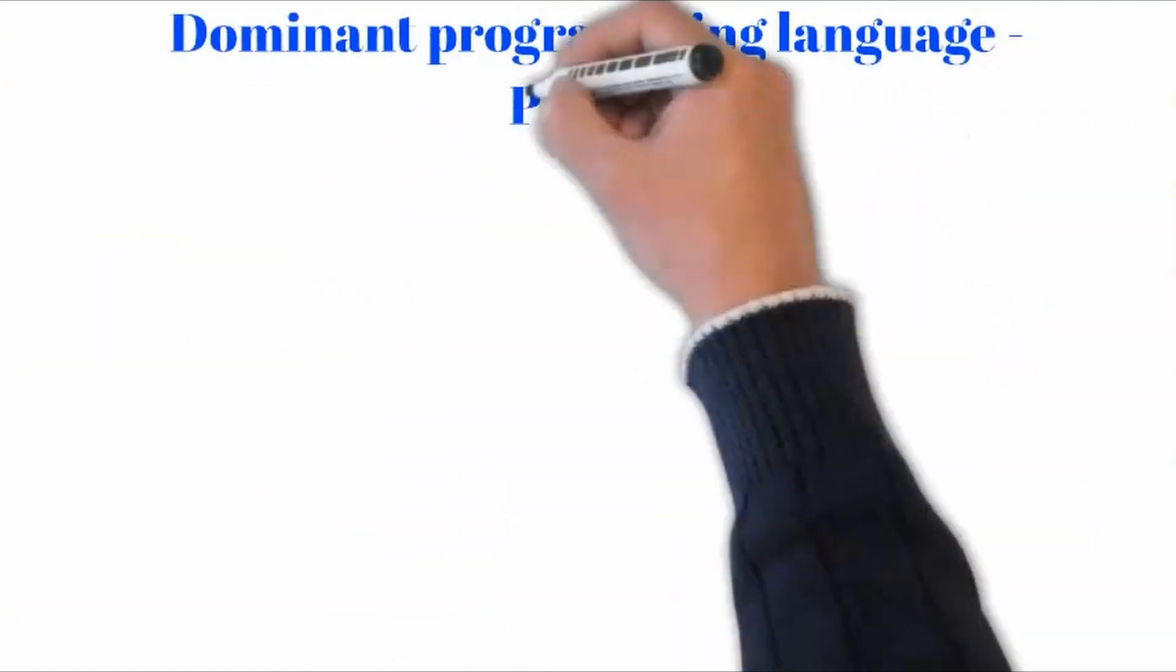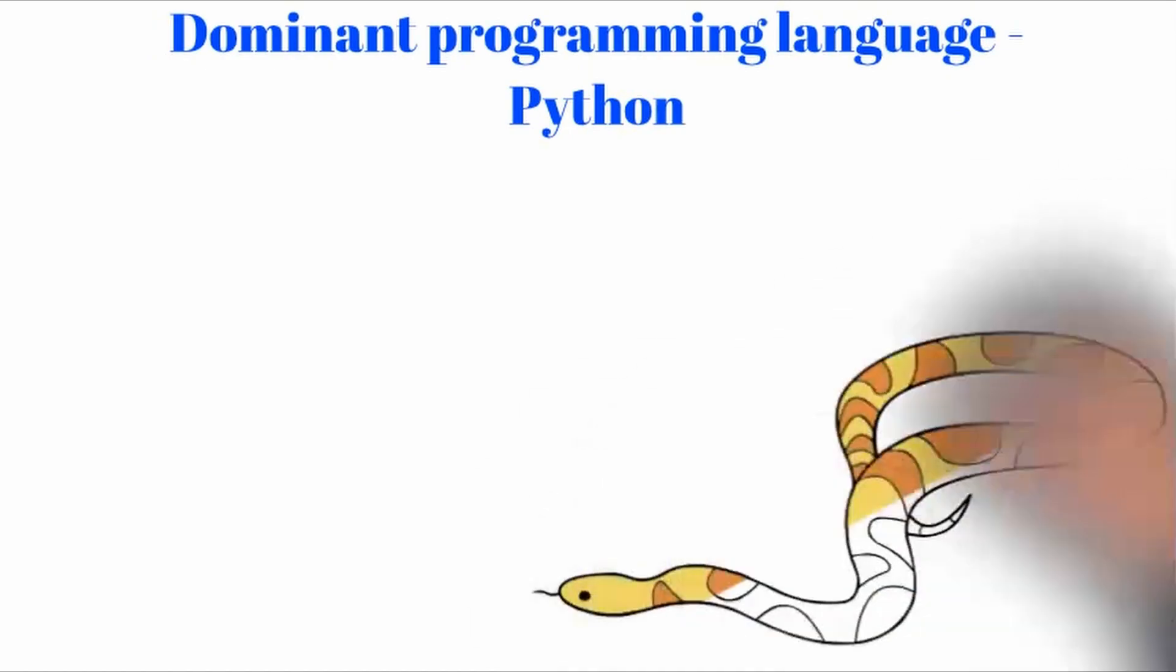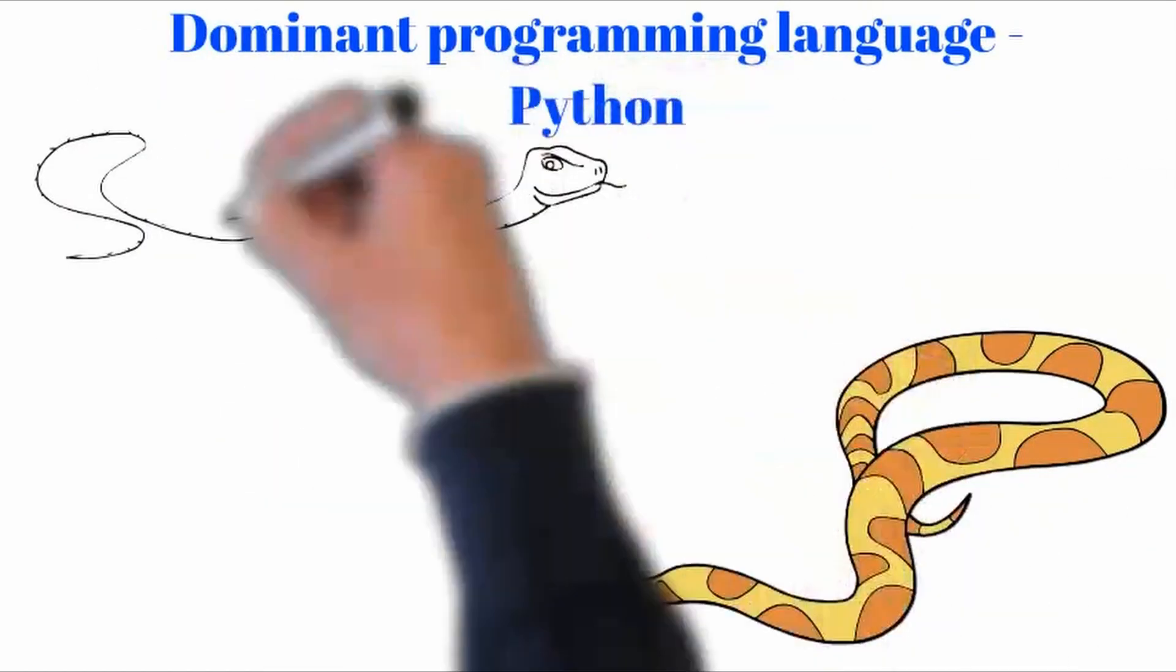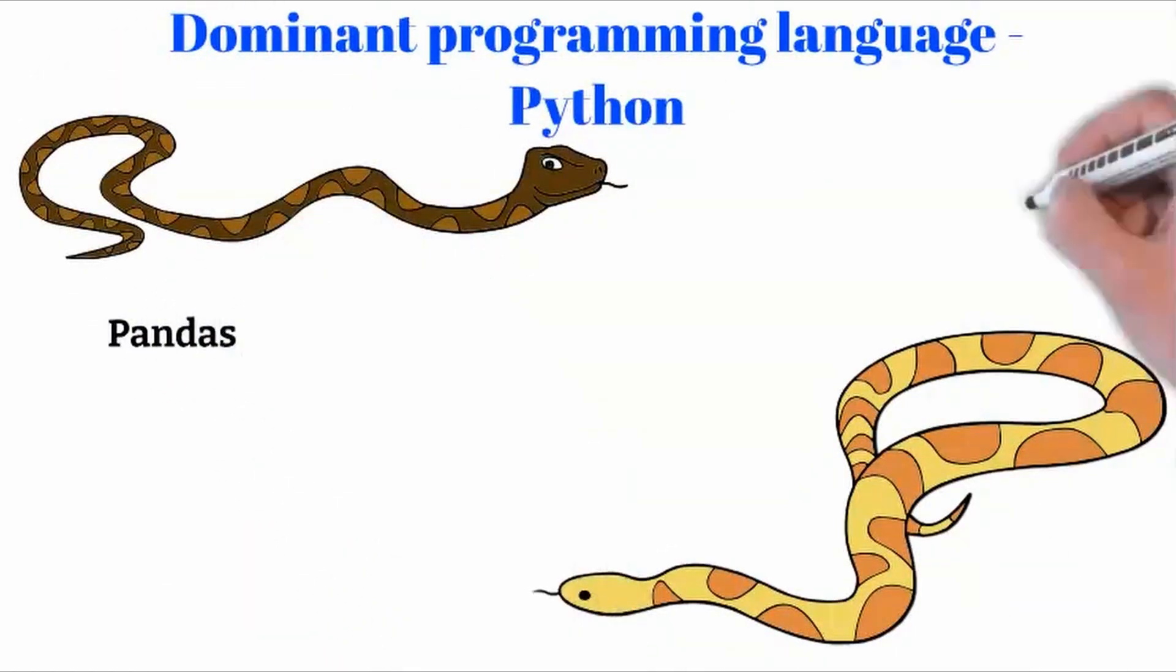Python is an easy-to-learn programming language, and it has the most libraries prepared for operations with artificial intelligence. That's the reason why it's the dominant programming language in that area. Examples of libraries are: